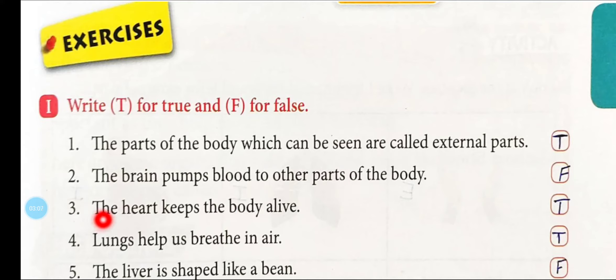Number three: 'The heart keeps the body alive.' हमारी body को heart जिन्दा रखता है — heartbeat हमारी चलती रहती है। जब तक हम जिन्दा हैं, तब तक हमारी heart beat continuous चलती है। और अगर कोई मर गया है तो कैसे पता चलेगा? उसकी heart beat बंद हो गई है। तो यहाँ पर यह सही बात है कि हमारा heart हमें जिन्दा रखता है — इसके लिए हम लिखेंगे T।